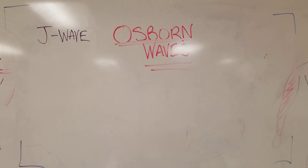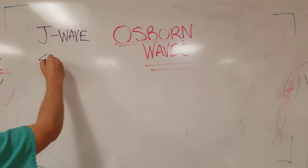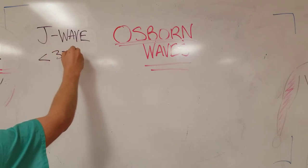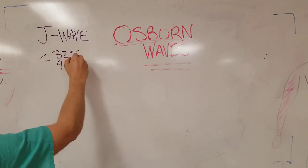It was first discovered or at least first described by Dr. Osborne who made dogs hypothermic and then hooked them up to an ECG trace. This usually becomes clinically apparent on ECGs if the patient is less than 32 degrees Celsius, 90 degrees Fahrenheit.